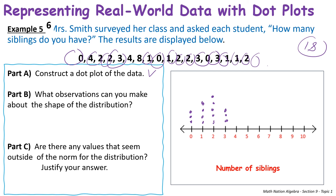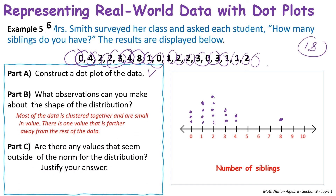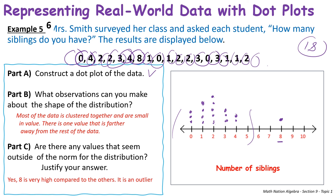Continuing: three threes get three dots; two fours get two dots; no fives, no sixes, no sevens; one eight gets one dot. I count all dots: 18 total — the dot plot is correct. For part B, most of the data is clustered together with small values. There is one value further from the rest — 8 — which would be an outlier. Eight siblings is quite a lot compared to the others, confirming it as an outlier.